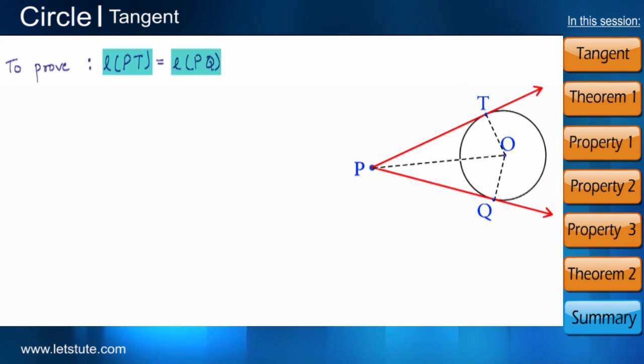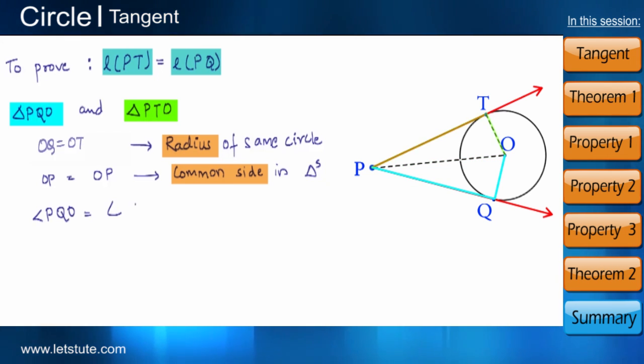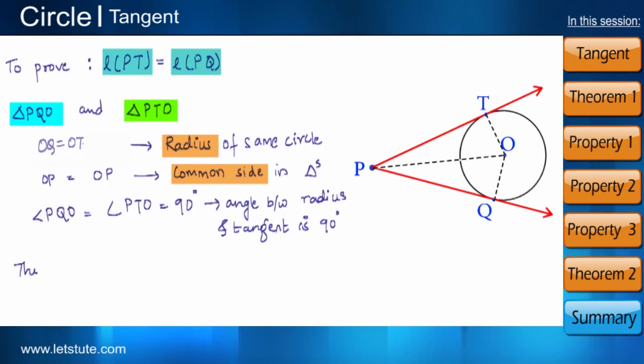Let us proceed further. Now if we have a look at these two triangles, that is triangle PQO and triangle PTO. In these triangles, OQ is equal to OT because they are the radii. And angle PQO is equal to angle PTO which is equal to 90 degrees. Angle between the radius and tangent is 90 degrees as we have just studied in our previous theorem. Thus, from these three points, we can prove that triangle PQO is congruent to triangle PTO.